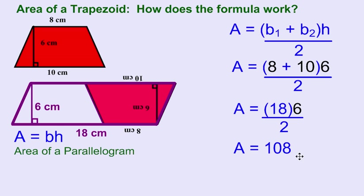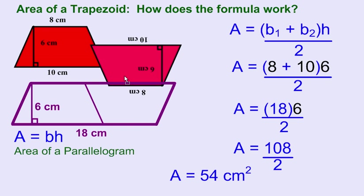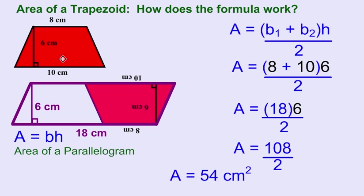So if I take 108 and divide by 2, I get an area of 54 square centimeters. This one red trapezoid is 54 centimeters. Two of them would be 108, but I only want the one. This is where the formula comes from.